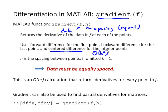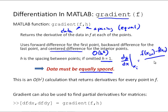h is the spacing between points. If you leave it out, the default is h equals 1. Generally you would include that value, and the data must be equally spaced, since this is implementing the centered finite difference formula: dy/dx evaluated at x_i equals f(x_{i+1}) minus f(x_{i-1}) over 2h. For h to be defined, we have to have equally spaced data. It's a second order calculation that returns derivatives for every point in f, so it's better than the diff approach in general if the data is equally spaced. One note: we are using first order approximations for the first and last points.